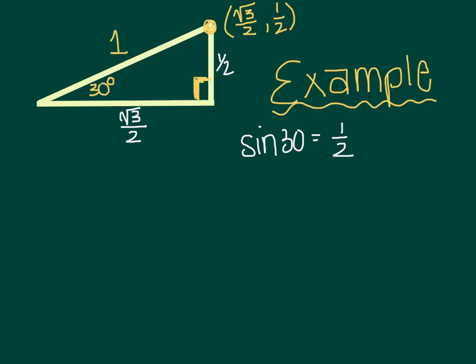And we know the cosine of 30 equals the square root of 3 over 2, because that's our x value. So now let's look at what is the tangent of 30.